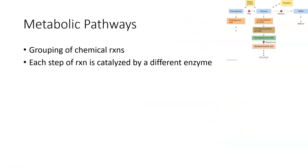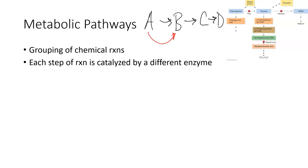Some metabolic pathways work together, and we group them into what we call a metabolic pathway. Let's say A happens first, then B, then C, then D — these pathways happen in a particular order. Every time we go from one step to the next, we typically use an enzyme. As we go from A to B we use a particular enzyme, from B to C another enzyme, and so forth.